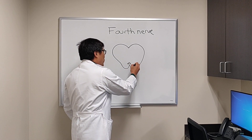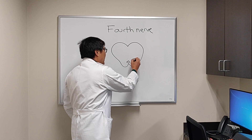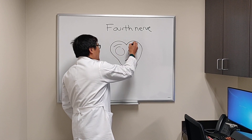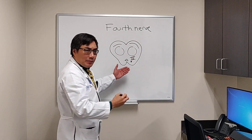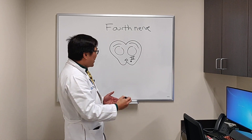We're looking at the fourth nerve nucleus, and this is the dorsal portion of the midbrain at the level of the inferior colliculus.